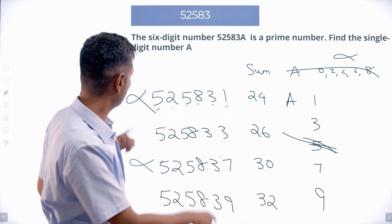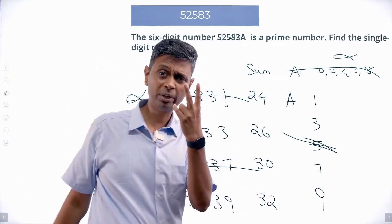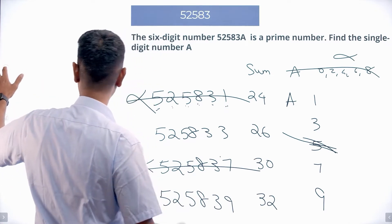These two are multiples of 3, I have only two remaining: 525833 and 525839.